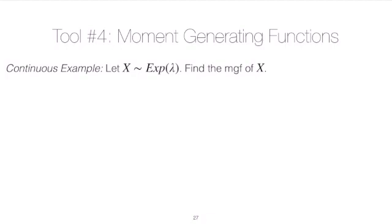We want to find the moment generating function of an exponential with rate parameter lambda. Remember the moment generating function we denote as m with subscript of the random variable, and it's a function of this variable t. By definition, the moment generating function is the expected value of e to the t times the random variable X.